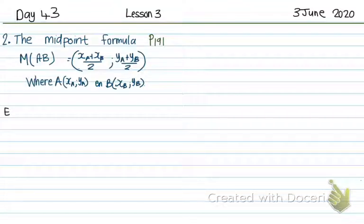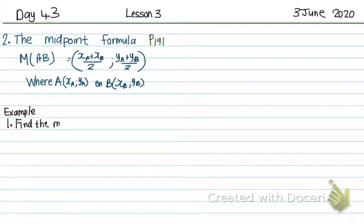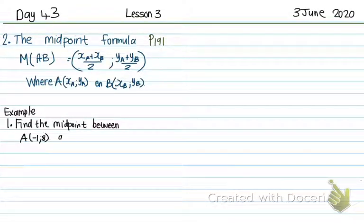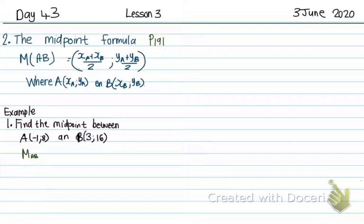For example, find the midpoint between A(-1, 8) and B(3, 16). So the midpoint of AB — I write capital M, A, B. It's important that it's capital because if it's not capital, it means the gradient.